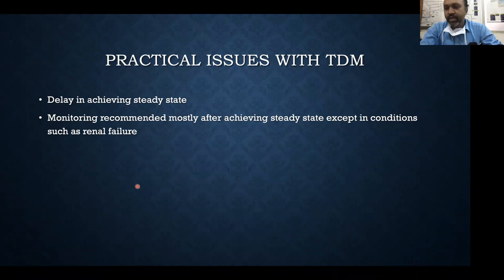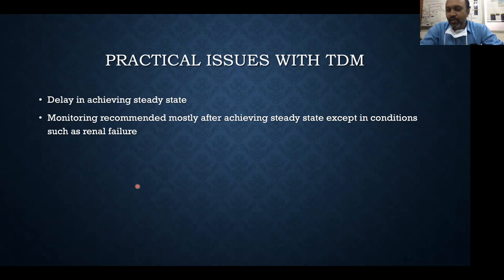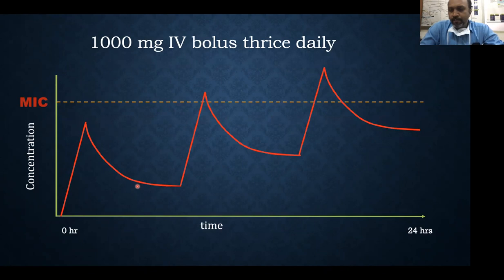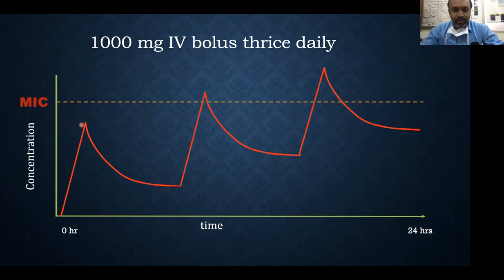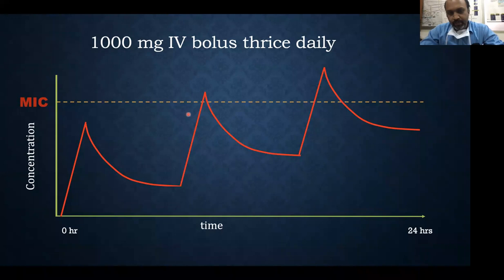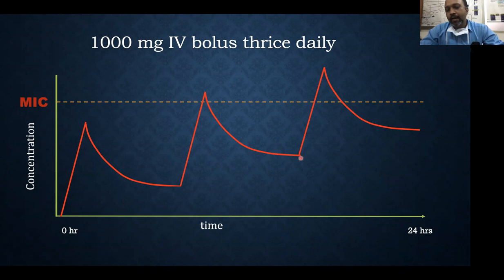If a patient has renal failure, for example vancomycin with GFR of 30, you don't have to wait for five times the half-life of vancomycin. Ideally, within three days you should check any antibiotic's exposure, irrespective of steady-state conditions. When an antibiotic infusion is given, concentrations increase during infusion and fall after it ends. The second dose shows more accumulated exposure, and the third dose shows further accumulation in the initial few days or hours.